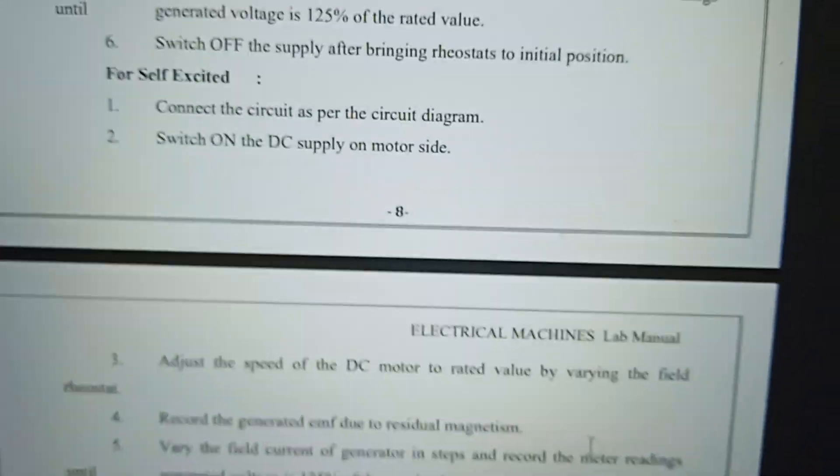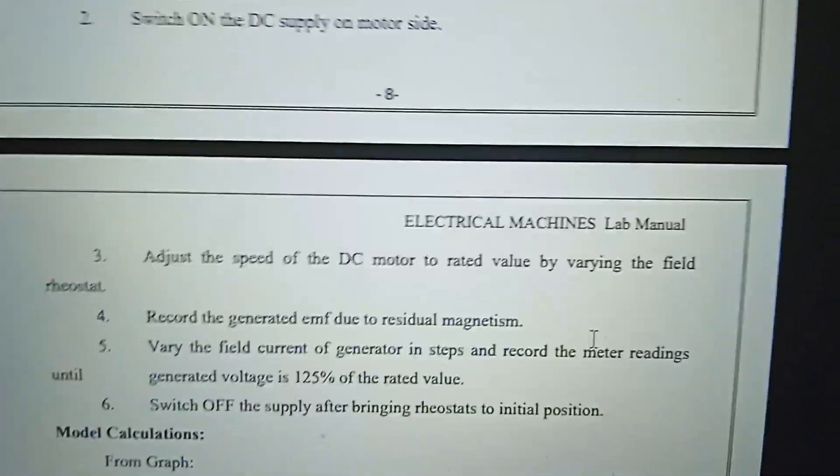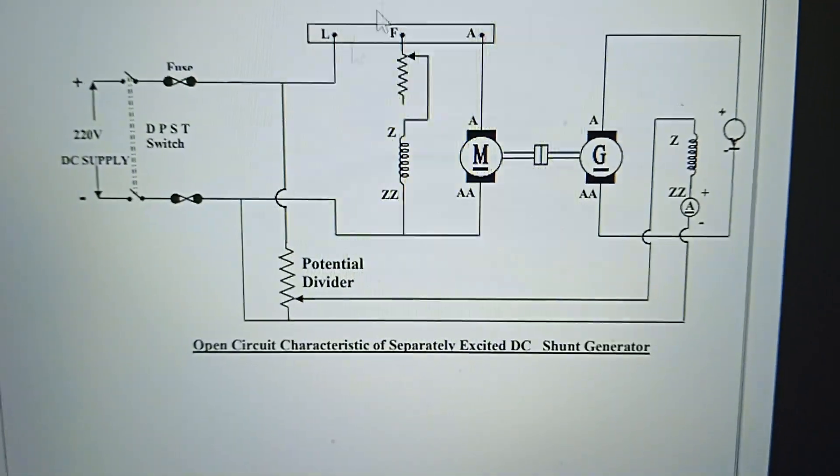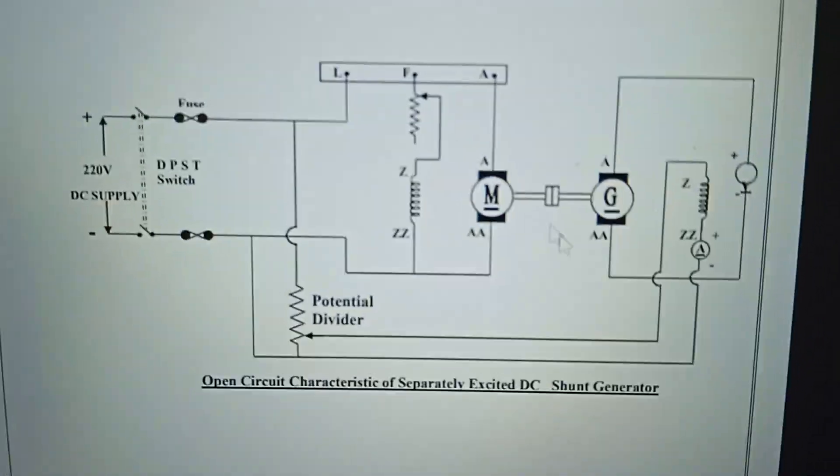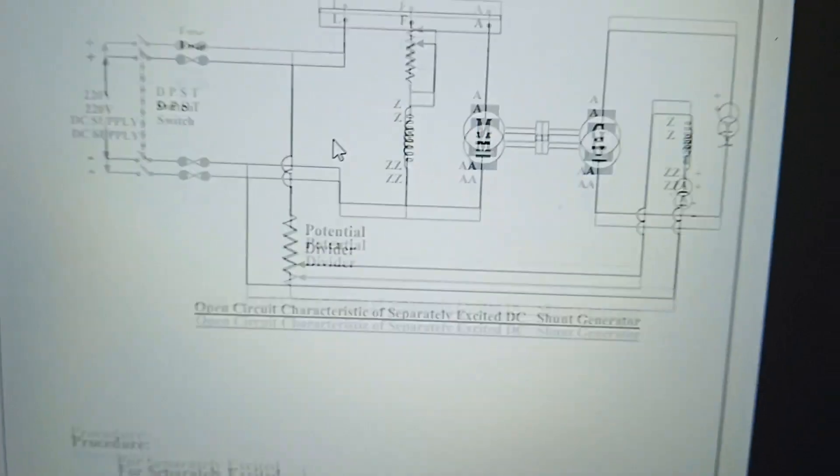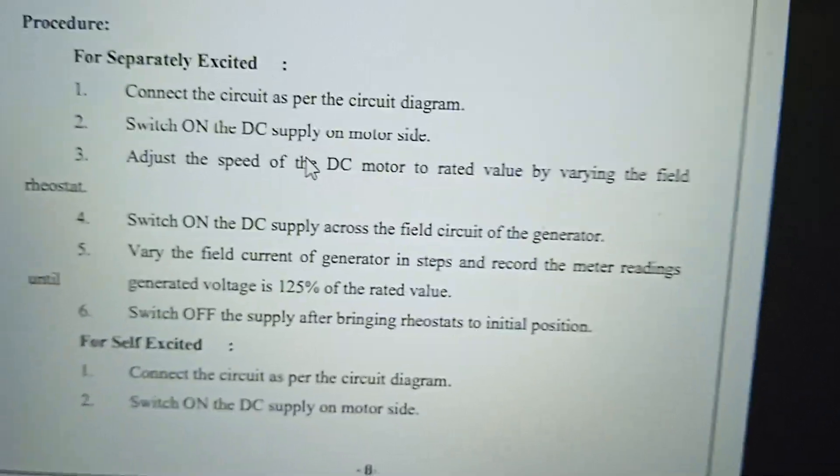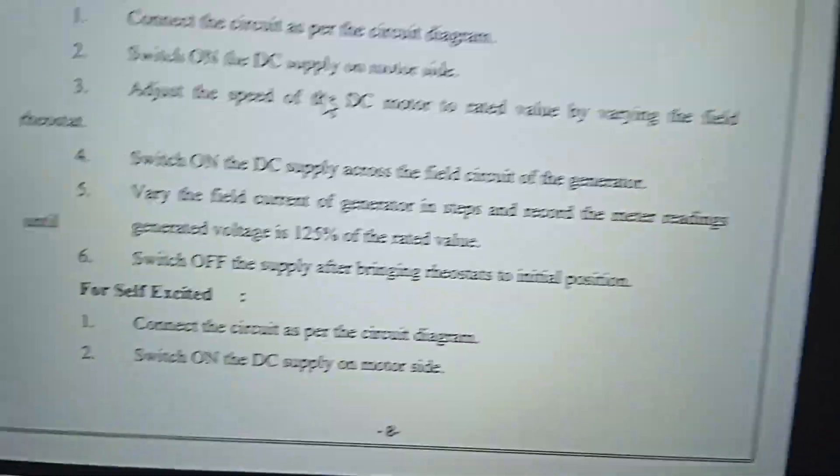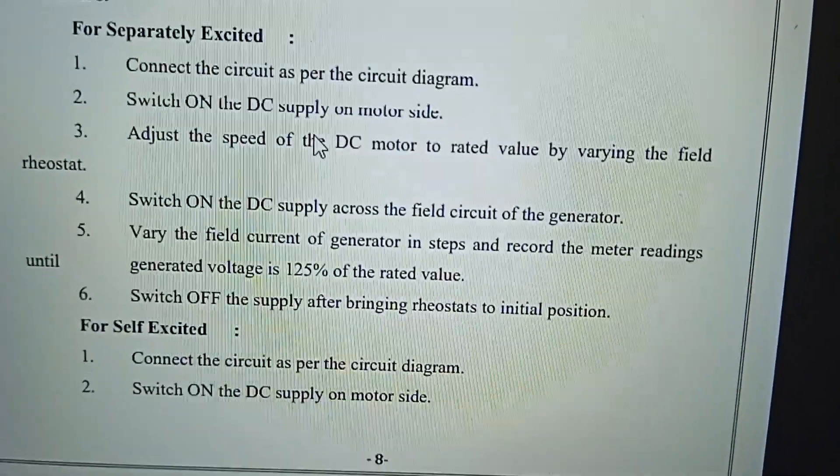The field rheostat is used to control motor speed. By adjusting the field rheostat resistance, we can control the speed. For the generator, the field rheostat is used to vary the voltage. When resistance is increased, current decreases and speed increases for the motor. For the generator, the field rheostat controls the voltage output.